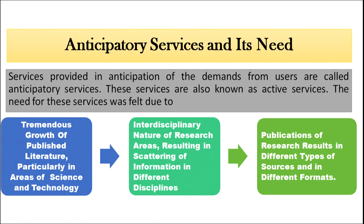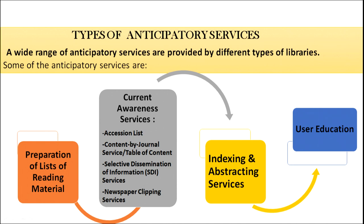Services provided in anticipation of the demand of the user are called anticipatory services. This service is also known as active services, because in advance we give the information to the user without the user asking for it. The need for these services is felt because of the tremendous growth of published literature, particularly in science and technology, the interdisciplinary nature of research resulting in scattering of information across disciplines, and the publication of research results in different types of sources and formats. A wide range of anticipatory services are provided by different types of libraries.